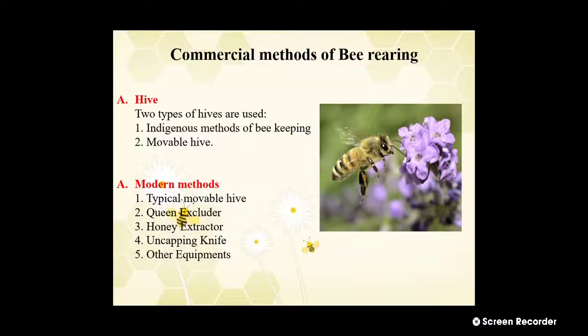The commercial methods of bee rearing are divided mainly into two types: first is the traditional hive (HAYU) and second is modern methods of bee rearing. The traditional hive is again divided into two types: indigenous method of bee keeping and moveable frame hive. The modern methods are divided into five types: typical moveable frame hive, Queen Excluder, Honey Extractor, Uncapping Knife, and other equipment. In today's lecture we will study only the indigenous method of bee keeping and the moveable frame hive.